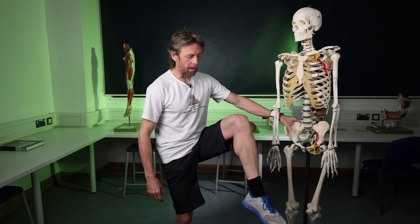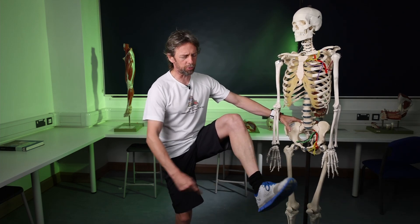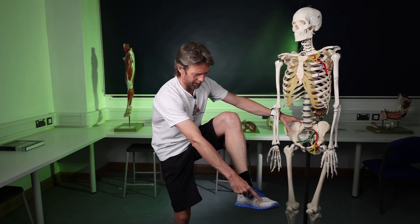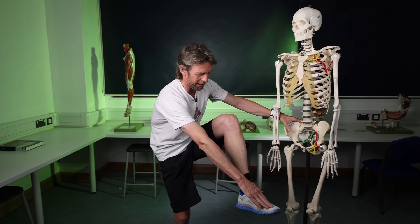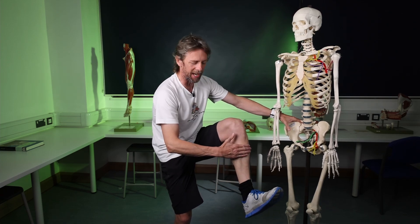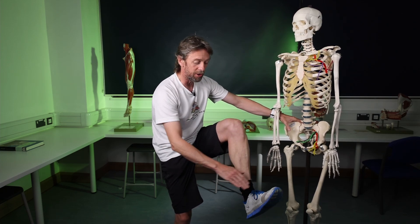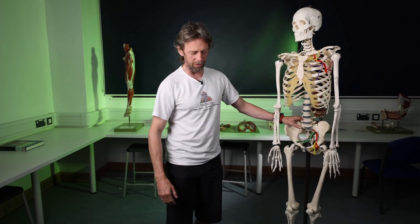Last week we talked about the anatomy of the sciatic nerve. This week we're going to lead on to the anatomy of foot drop. Foot drop describes the difficulty, inability, or weakness in bringing your toes towards your shin — dorsiflexion. It's a sciatic nerve injury, but which part of the sciatic nerve? Which muscles are involved?